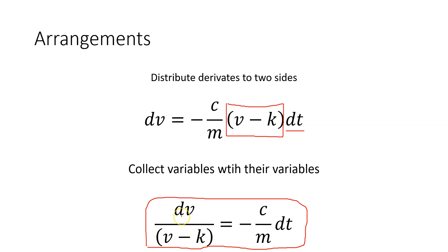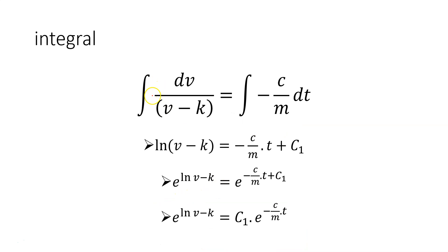Now, we can take the integral. As you see, if we take both sides' integral, since v is a variable and there is one here, we can take out of the integral ln(v - k). And here, since there is no variable, there is only one, we can get -c/m times t. But don't forget, there is a constant C_1 here, the integral constant.